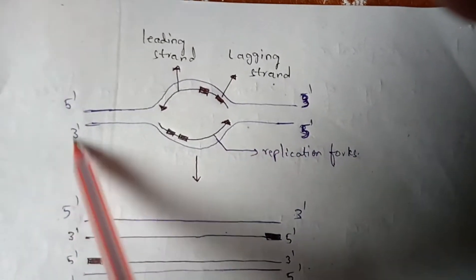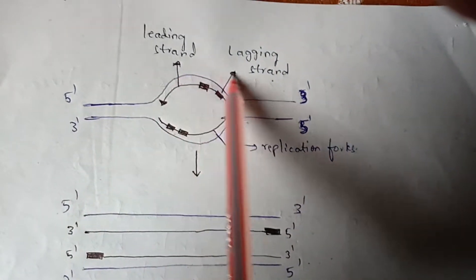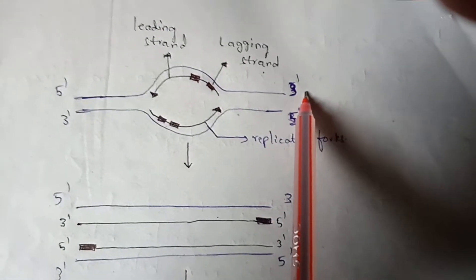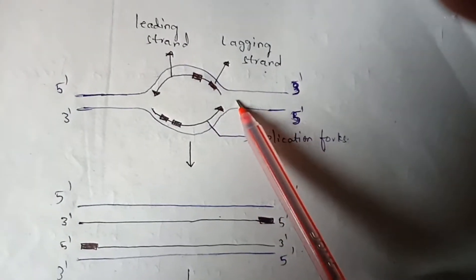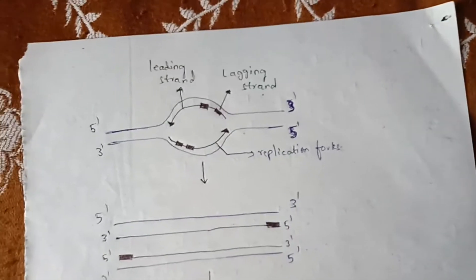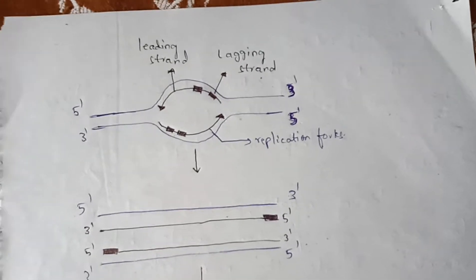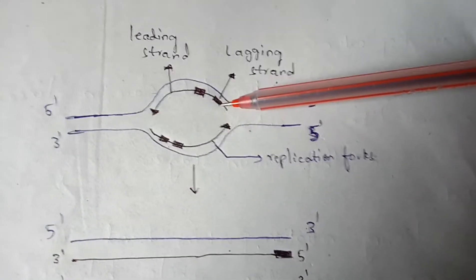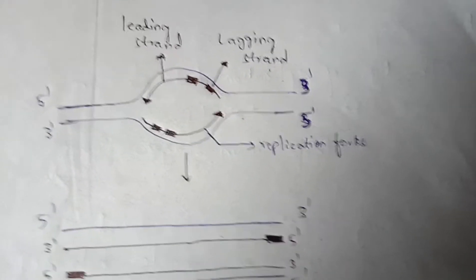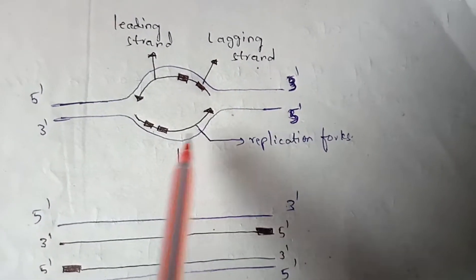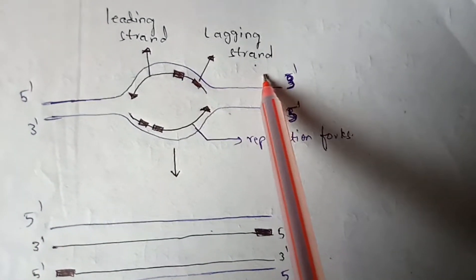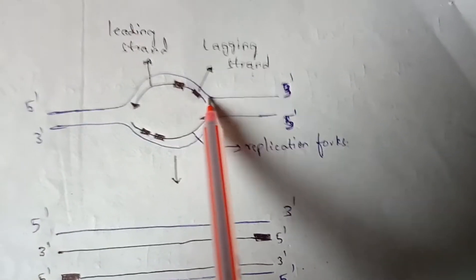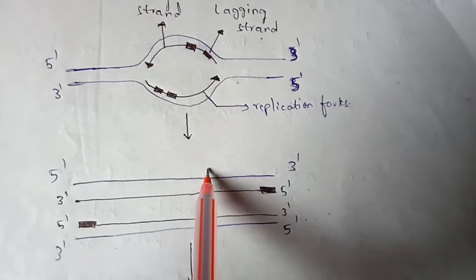Looking at the diagram: this is the 5' end and this is the 3' end. Here we have two replication forks. DNA replication converts double-stranded DNA into single-stranded DNA, forming two replicative forks — two single-stranded replicative forks. Each replicative fork consists of both a leading strand and a lagging strand. The leading strand is continuous whereas the lagging strand is discontinuous because of Okazaki fragments.